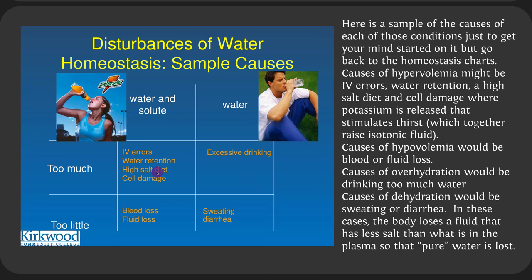Causes of hypervolemia might include IV errors, water retention, a high-salt diet, and cell damage where potassium is released, stimulating thirst and raising isotonic fluid. Causes of hypovolemia include blood loss or fluid loss. Causes of overhydration include drinking too much water. Causes of dehydration include sweating or diarrhea. When you lose water through sweat or diarrhea, it's not as salty as your plasma, so you are effectively losing purer water than what's in your plasma.